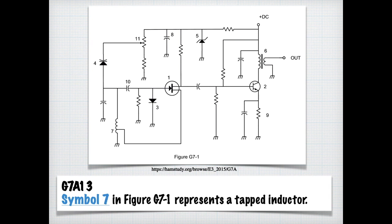And of course, if there's only squiggly lines without one in parallel, it's just an inductor. And this one shows a tap. So symbol 7 in figure G7-1 represents a tapped inductor.